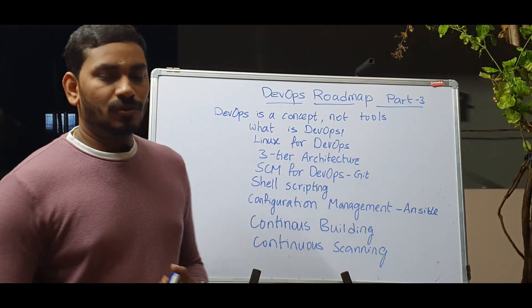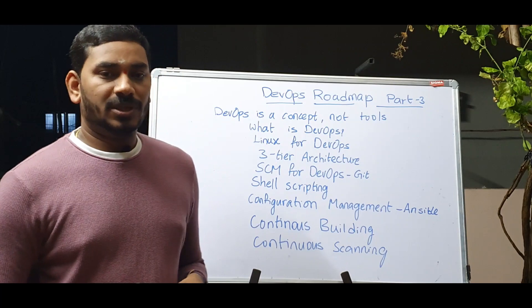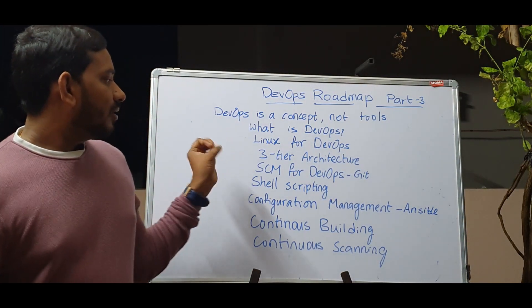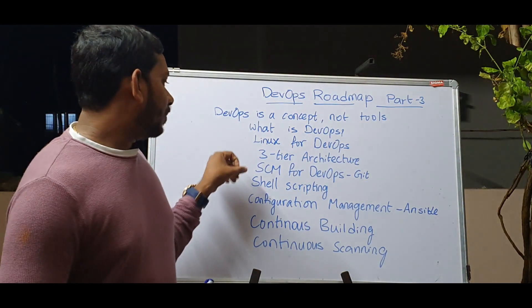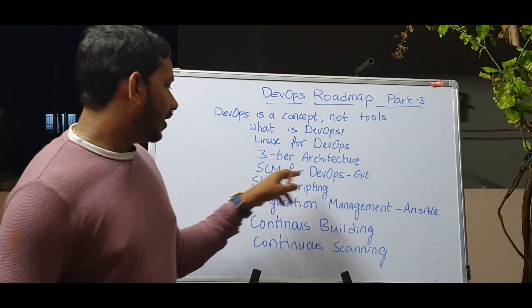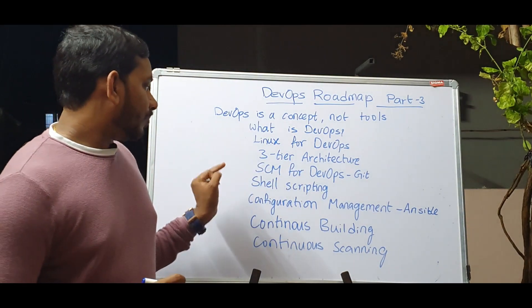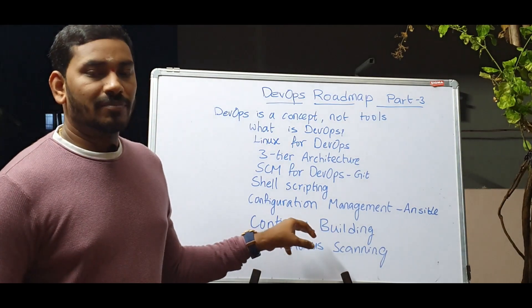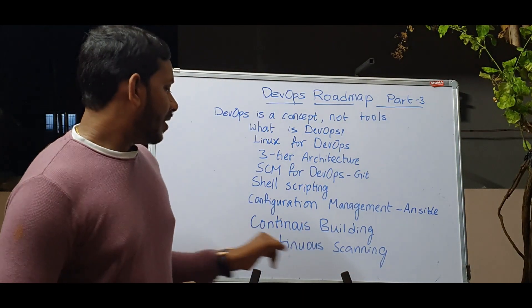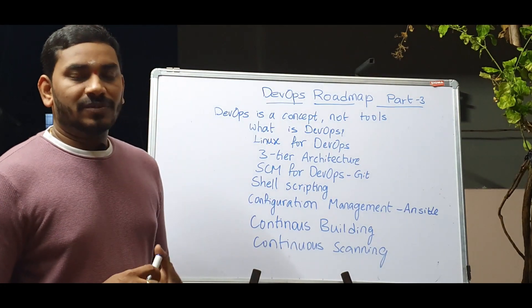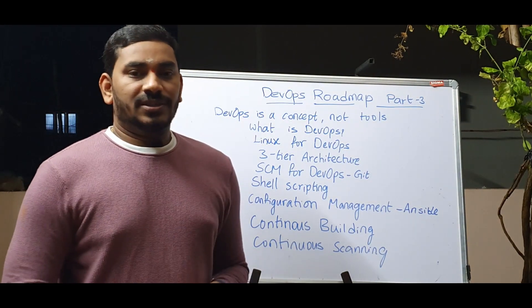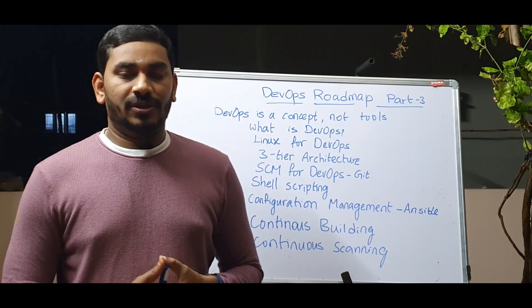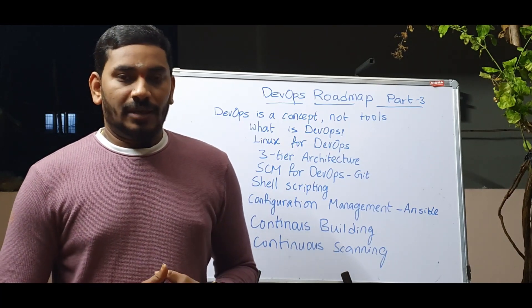We are going to talk about DevOps, 5 tools, and 5 concepts. We are going to cover Linux, DevOps, 3-tier architecture, Git, Shell Scripting, Configuration Management, Continuous Building with tools like Maven and NuGet, Continuous Scanning including Static Source Code Analysis, Static Application Security Testing, Dynamic Application Security Testing, Open Source Scanning, and Image Scanning.